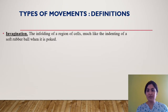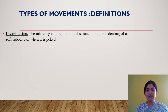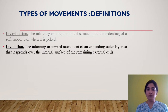The first type of movement involved in gastrulation is invagination. By definition, invagination is the infolding of a region of cells, much like the indenting of a soft rubber ball when it is poked. I will explain these movements in detail using diagrams in the next slide, referenced from Developmental Biology by Gilbert. The second movement is involution — the inturning or inward movement of an expanding outer layer so that it spreads over the internal surface of the remaining external cells.